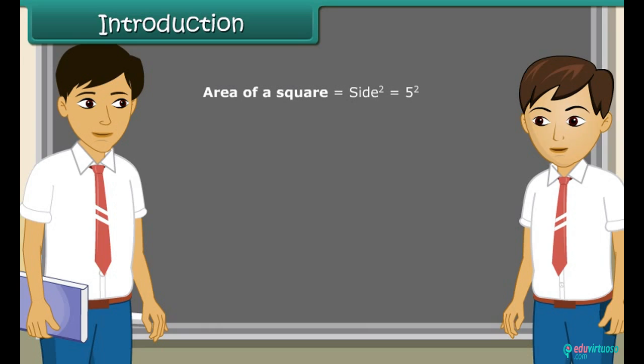What do two in the superscript of any number signify? Sam, it signifies the multiplication of any number with itself twice. So we call it a square of a number. Now I understand.